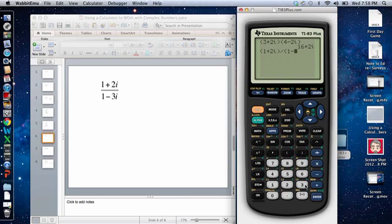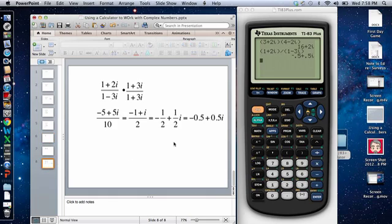1 plus 3i, second decimal point, close it. I'm going to hit enter and look at the answer we get: negative 0.5 plus 0.5i. And so we do end up with the same answer that we got when we did it manually.